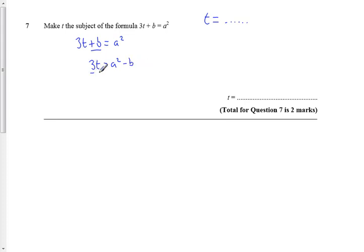Then I'm going to divide by 3 because at the moment it's multiplied by 3 and I want t on its own. And that's what's going to be the second mark. So I have t equals a squared minus b, all divided by 3. Now I've got an equation which is t equals on its own, therefore t is the subject of the formula. And I'm finished. Two marks.